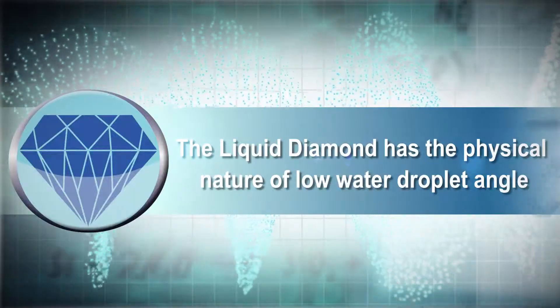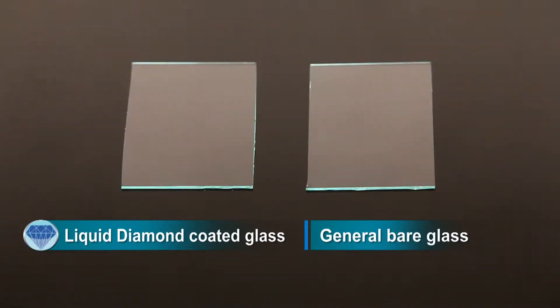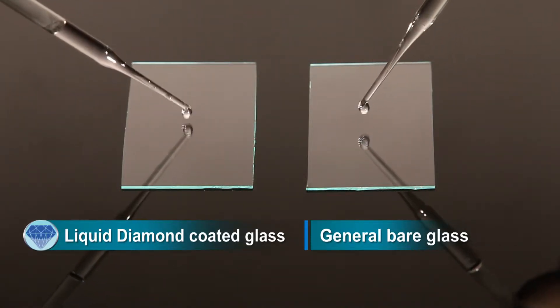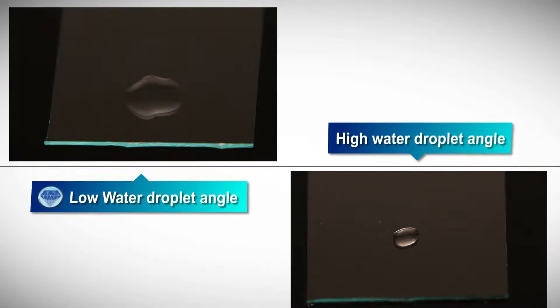Drip a droplet of water onto each glass plate. The left side is Liquid Diamond coated. You'll see the Liquid Diamond coated one has a lower contact angle.